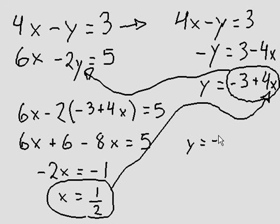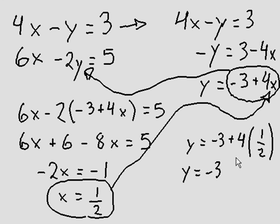So y equals negative 3 plus 4 bracket half. Great. Now we'll just solve for y. y equals negative 3. 4 times half is 2. So y is equal to negative 1.